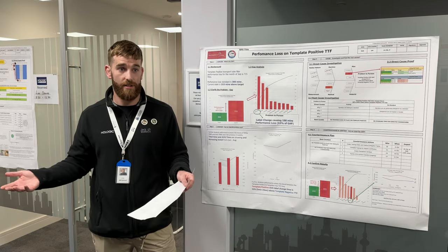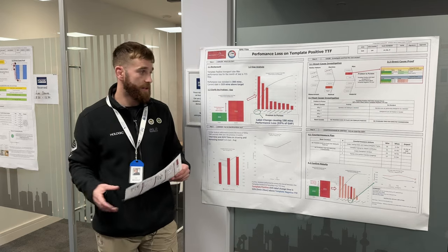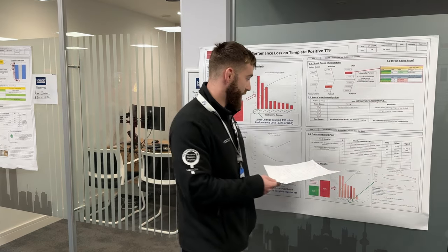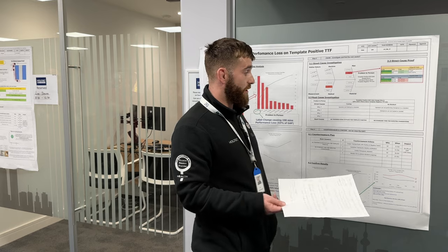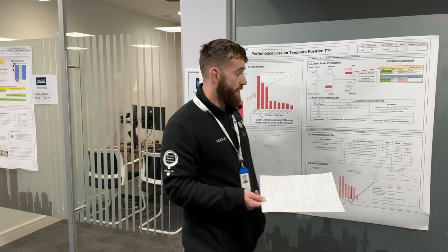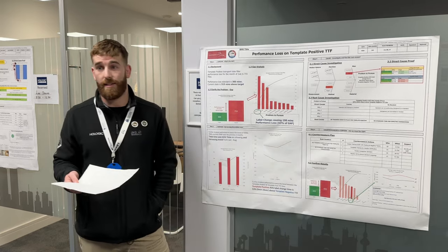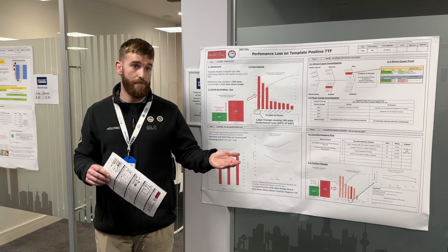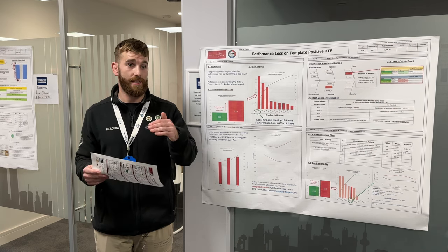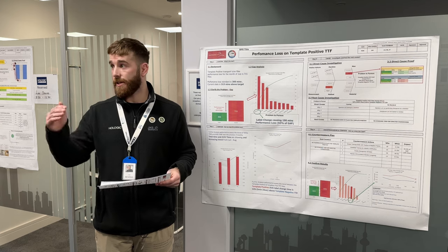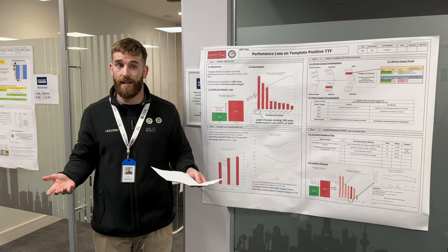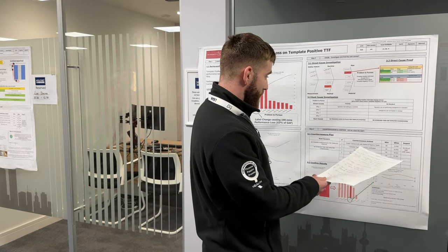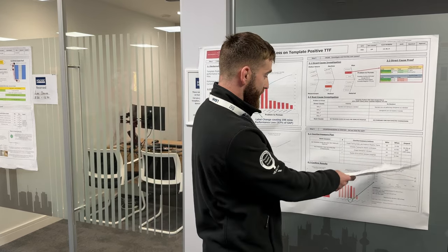With no standard time for expected changeovers we needed to create a standard. I met with the teams and we agreed on a standard changeover time of two minutes - both template positive and template negative will work to that standard. That will allow us to see if we're winning or losing, where at the minute we don't really have anything showing what good looks like. Those are the three actions I've implemented.